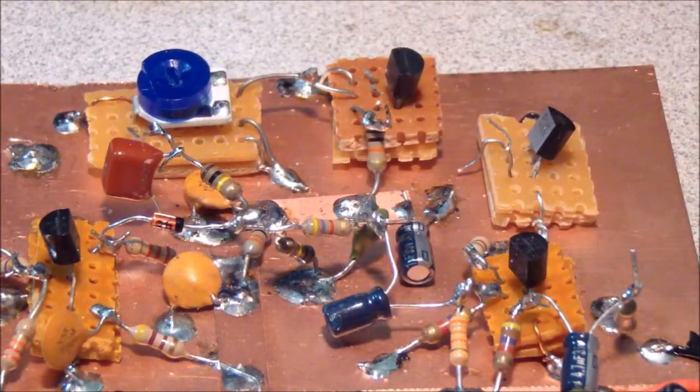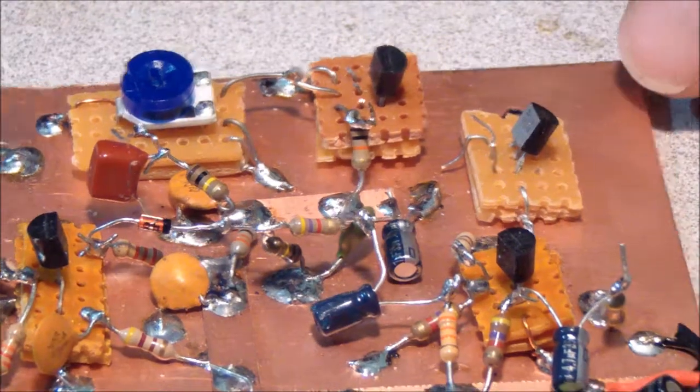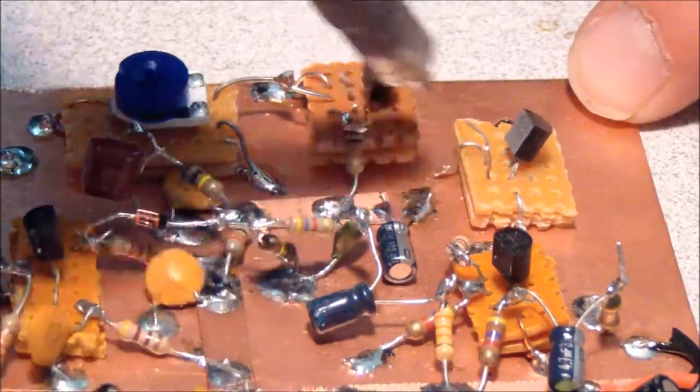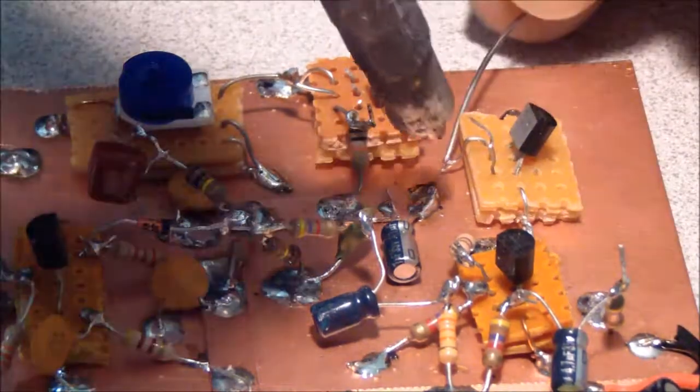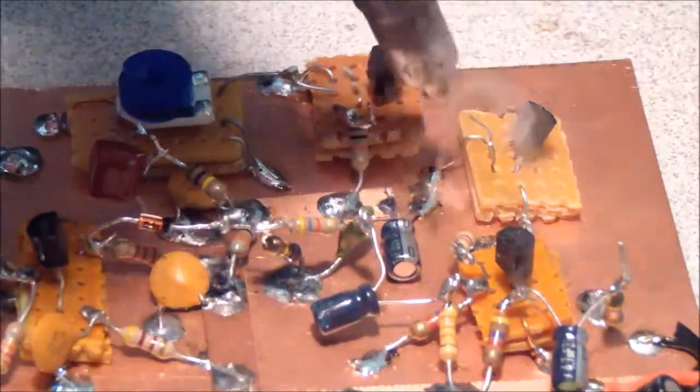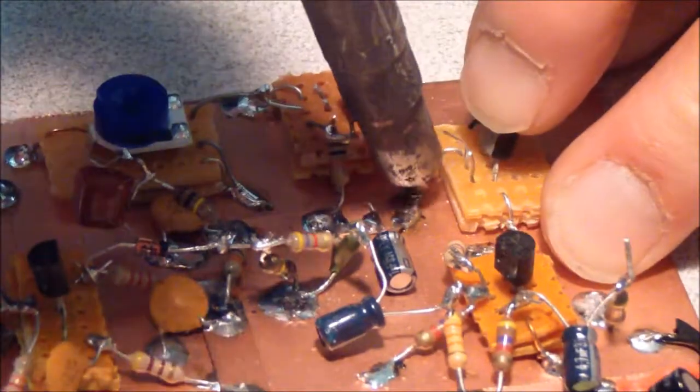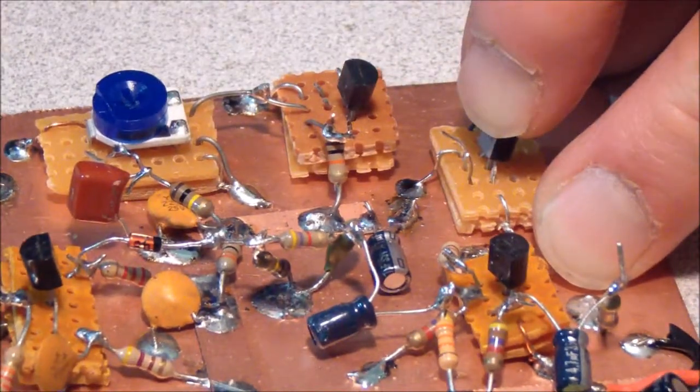Now this is also being used as a DC switching transistor. So I'm going to be soldering the emitter lead of this transistor directly to ground as we did with the previous stage.